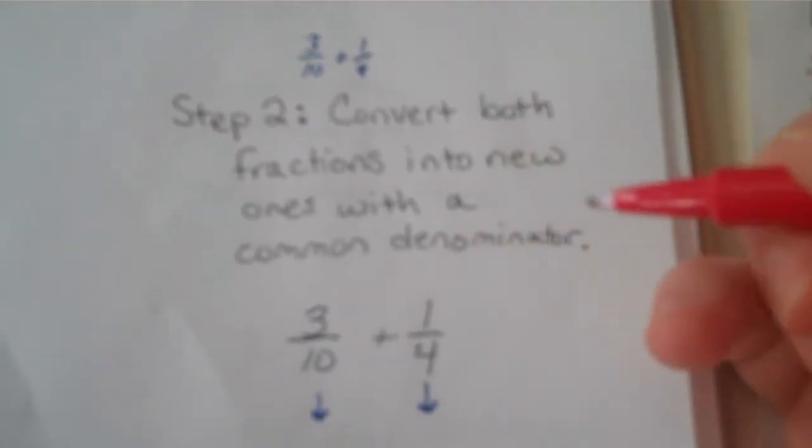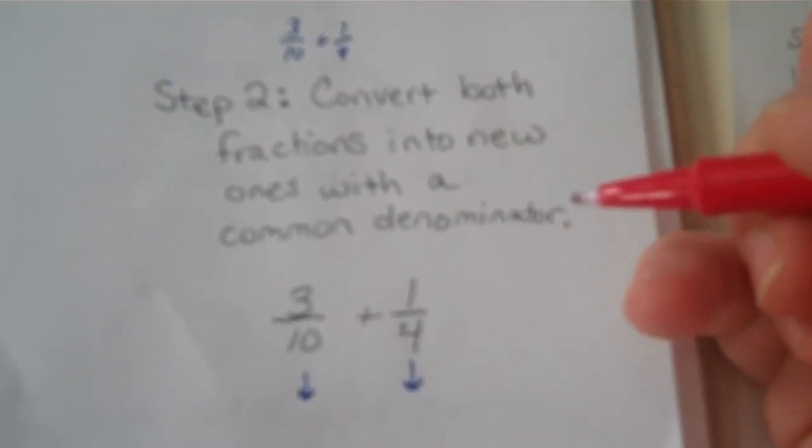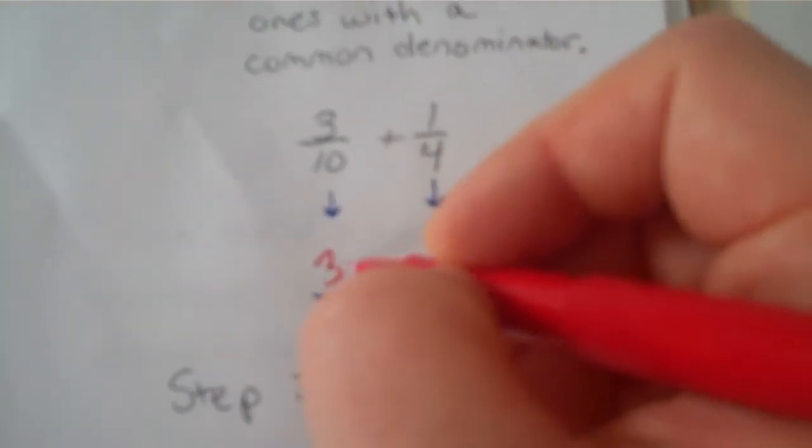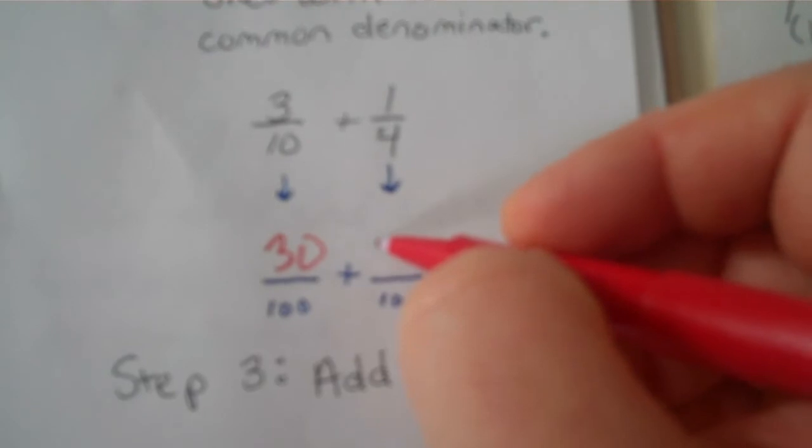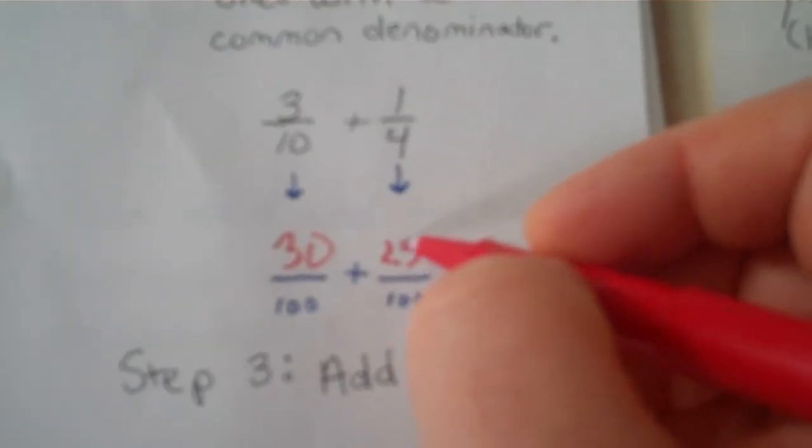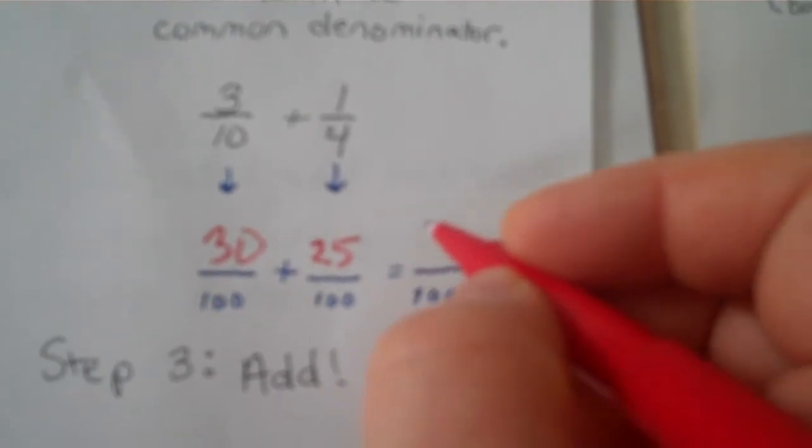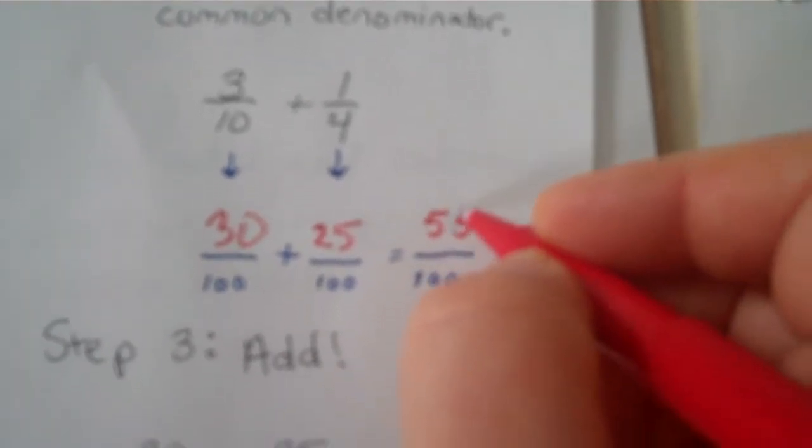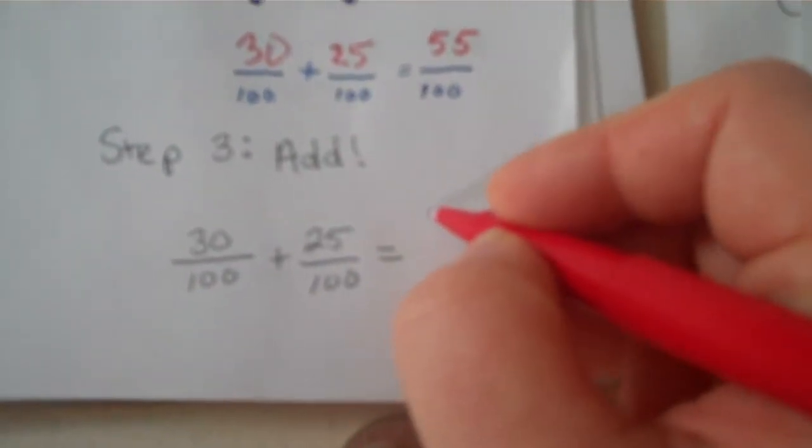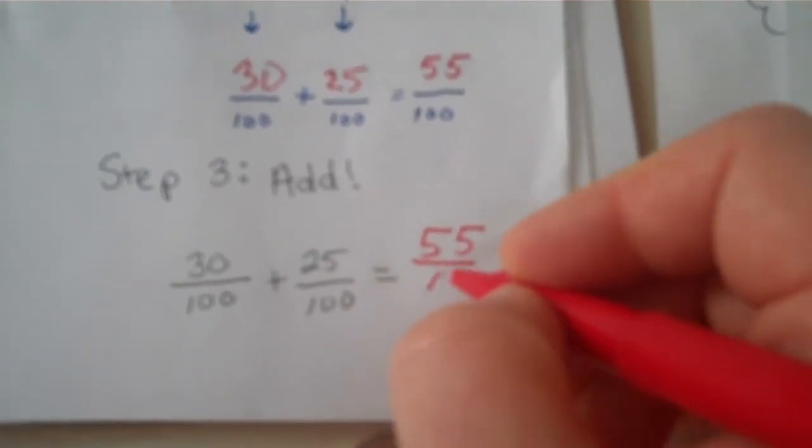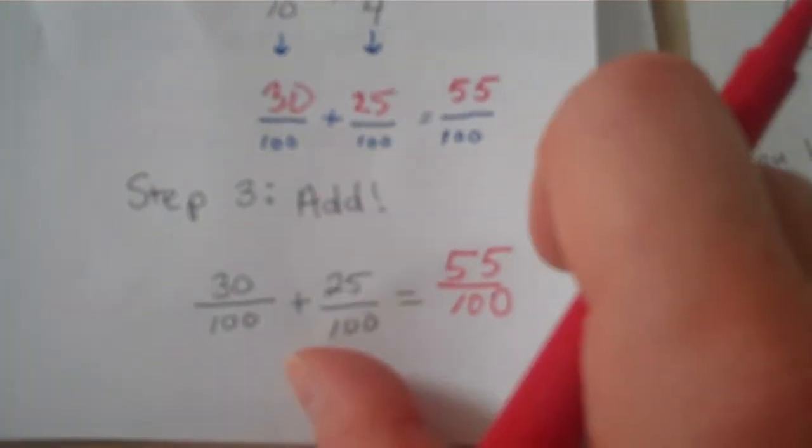Convert both fractions into new ones with a common denominator. Three tenths is thirty hundredths, and one fourth is twenty-five hundredths. Thirty plus twenty-five is fifty-five. I just have to add. Thirty hundredths plus twenty-five hundredths is fifty-five hundredths, not fifty-five two hundredths.